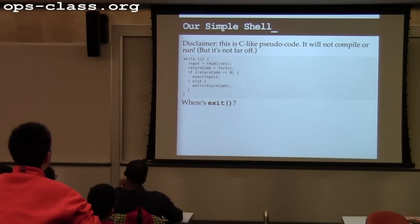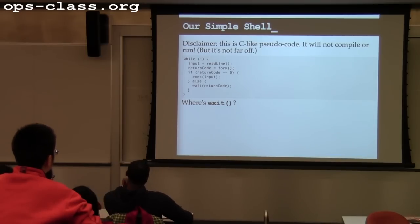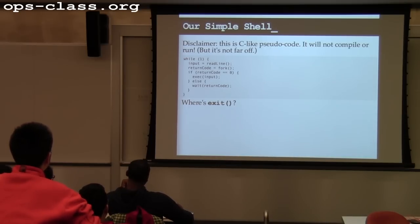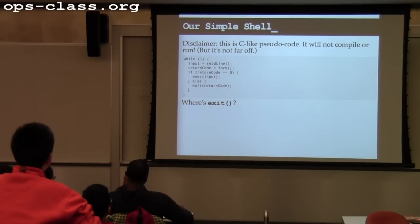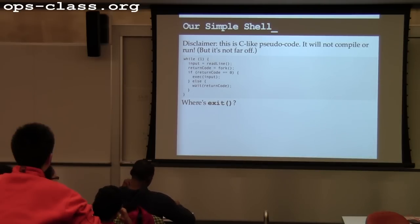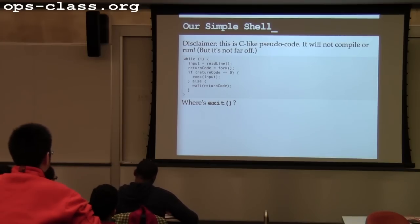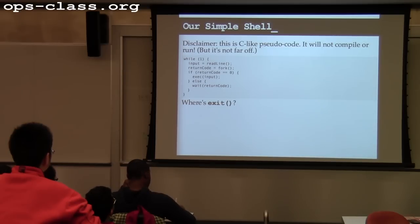Here's a simple shell written in C-like pseudocode — probably the simplest possible shell you could write. It doesn't put prompts, but it essentially just reads lines of input and calls fork. In this particular shell, the child runs exec and the parent runs wait. Could you do it the other way around — have the parent run exec and the child run wait? That wouldn't work.